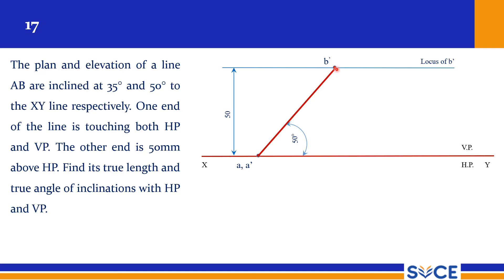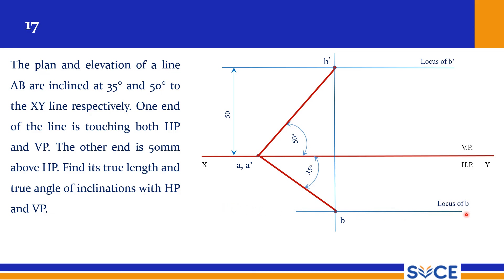Now we have to rotate. B dash and B should lie on the same projector. At 35 degrees we have B, and this becomes the locus of B. We can easily rotate in reverse direction. Rotating A dash and B dash up to the locus of A dash gives B2 dash. From B2 dash, drop a line down to the locus of B to get B2. Now A and B2 give the true length.